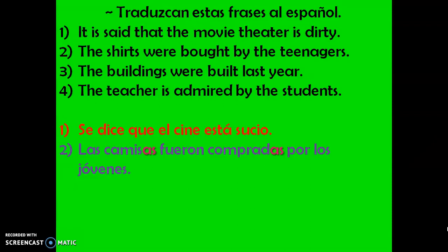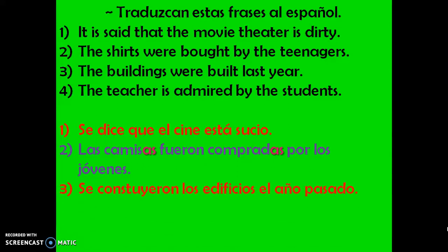Number three: The buildings were built last year. What's the first question you ask yourself when you think it might be passive voice? Do you know by whom? We do not know by whom. So formula number one, simple passive voice. We have to figure out: is it singular or plural? It's plural. What verb tense? Preterite — it's a completed action. So we start with se, third plural of the preterite. The correct answer is: Se construyeron los edificios el año pasado. Muy bien.